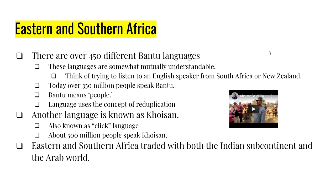Now what about the eastern and southern part of Africa? There's a lot of history here and I can't possibly cover it all, so just some of the bare minimums. First of all, there are two language groups — one is called Bantu and one is known as Khoisan. For the Bantu languages, there are over 450 different dialects of Bantu.